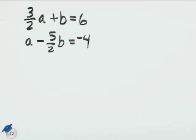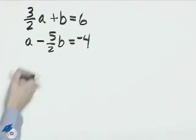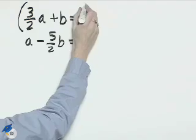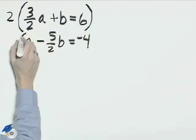To solve this system by addition, let's first multiply through each of these equations by 2 in order to eliminate those denominators.